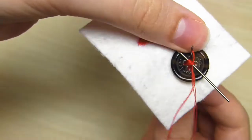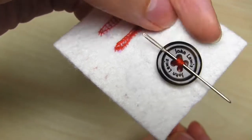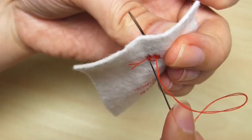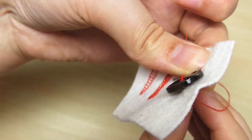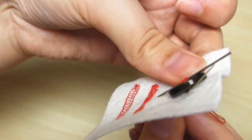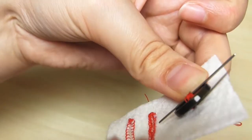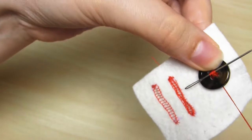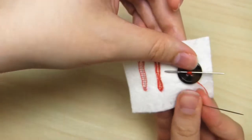Once you've done that, bring your needle up through the fabric, but not up through the button, so it's just sandwiched in between. Then pull the thread through. Then remove the large needle.